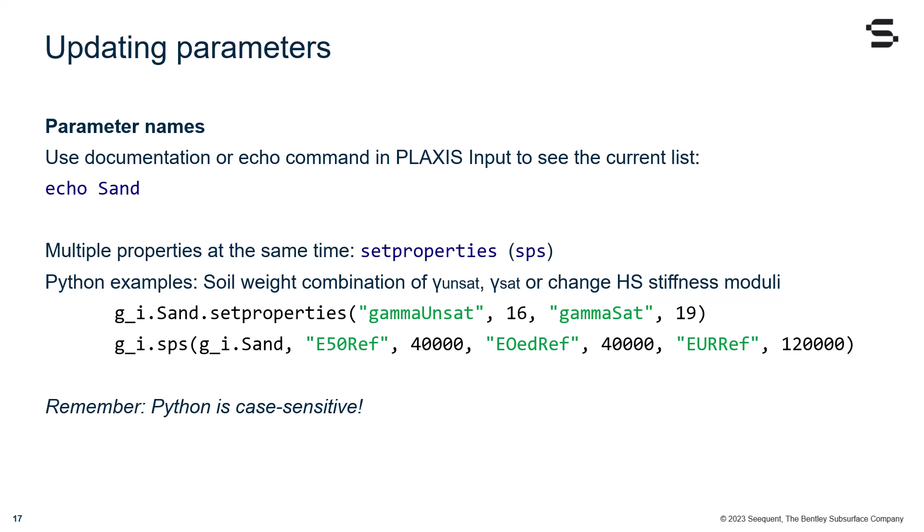E50Ref, 40,000, EoedRef, 40,000, EurRef, 120,000. Remember that Python is case sensitive when writing down object and property names.